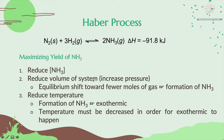Second, reduce the volume of the system by increasing the pressure. When the pressure increases, the volume of the system decreases, and there is more collision between the compounds in the system. We need to reduce those collisions by shifting to a side with a fewer number of moles of gas — meaning fewer moles means less collision to decrease the pressure back.